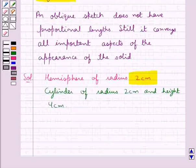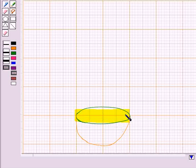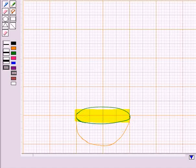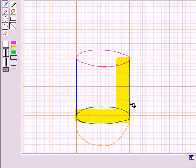Next, we need to place a cylinder on this hemisphere of radius 2 cm and height 4 cm. So this would become the base of the cylinder. Now, as the height of the cylinder is 4 cm, so we will take 4 blocks. As you can see, we have taken 4 blocks to depict the height of the cylinder which is 4 cm.